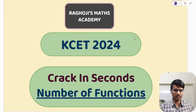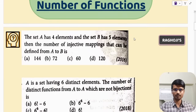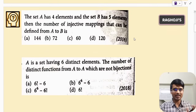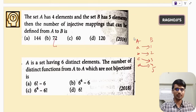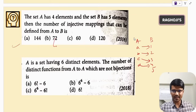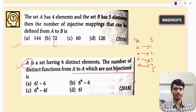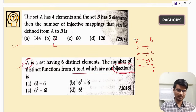In today's video, the shortcut method will help you find the number of functions. For example: set A has four elements and set B has five elements — how many injective (one-one) mappings can be defined from A to B? Another question: set A has six distinct elements — how many distinct functions from A to A are not bijective? Using the shortcut method, you'll solve these in seconds.